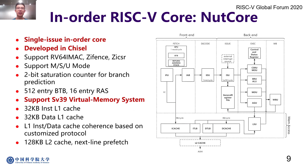The processor core used in the Nutshell chip is called the NUT core. NUT core is a single-issue in-order core written in Chisel. It supports M, S, and U modes. We used 2-bit saturation counters for branch prediction. NUT core supports the SV39 virtual memory system. Instead of using a cache coherence protocol, we used a customized protocol to maintain coherence between the L1 instruction cache and L1 data cache. By default, a 32KB L1 instruction cache and a 32KB L1 data cache are provided. NUT core also has an optional 128KB L2 cache with a next-line prefetcher.